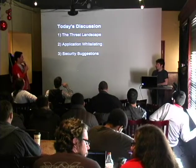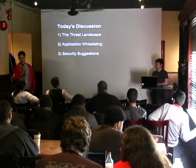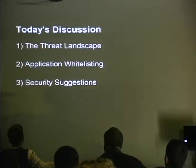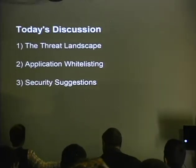Today's discussion: we're going to talk about the threat landscape, specifically malware for Windows. We'll give a brief summary of ways people have tried to stop it in the past, then get into the meat of the discussion — application whitelisting, which we think is one of the new breeds of endpoint security — and show you how we break it in some ways.